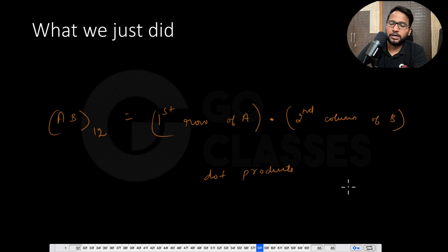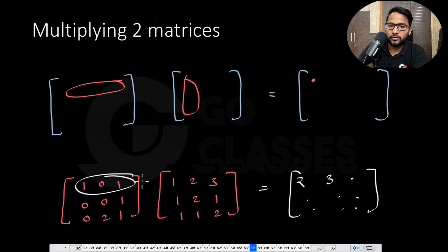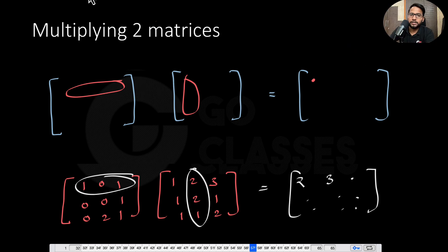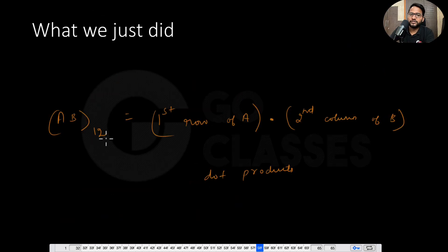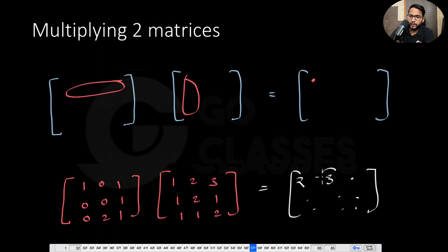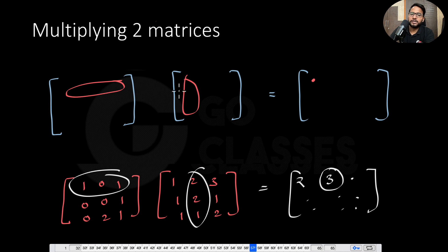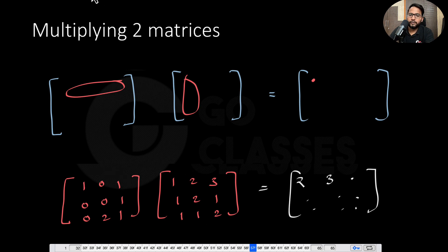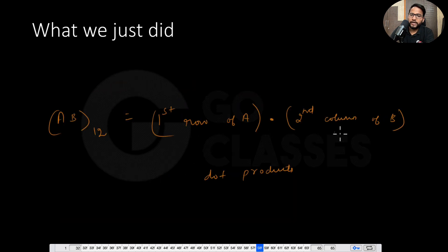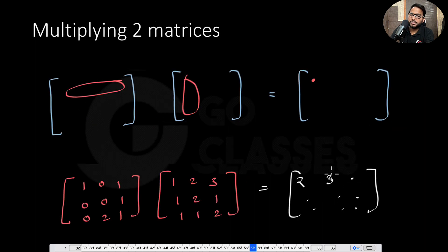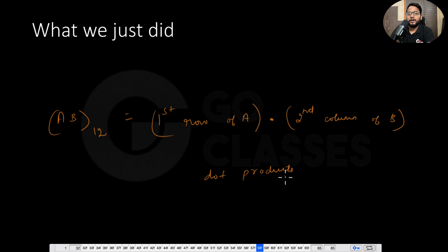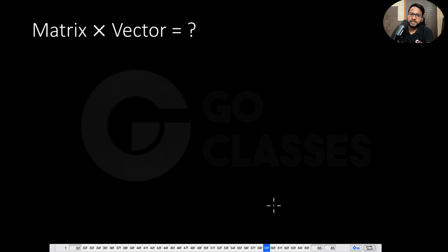That's how we did it in school — we took this row and this column to get the first-row, second-column element. So to get this particular element, we are basically multiplying this row and this column. We need to multiply the first row of A and the second column of B to get element (1,2). Now, can we multiply two matrices in any other way? Let's see.